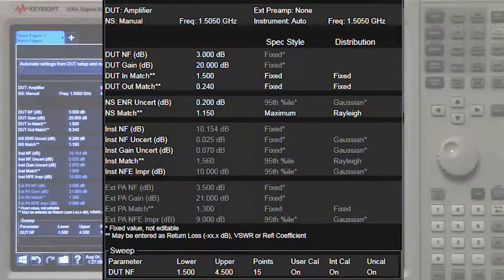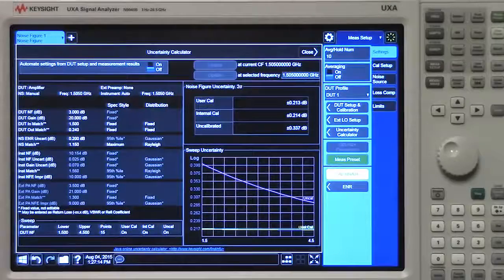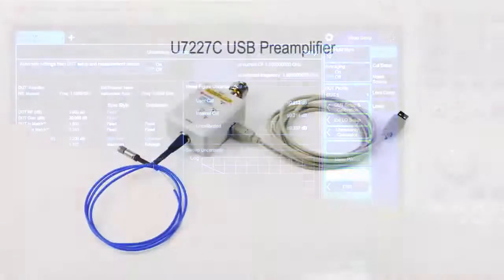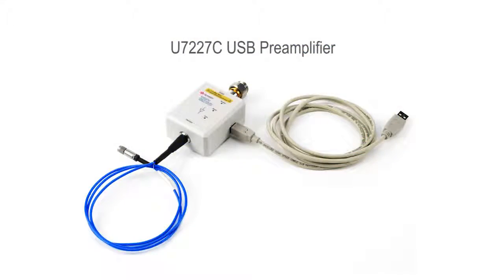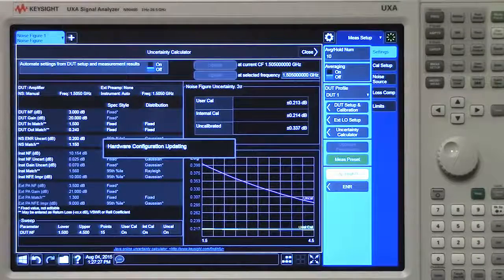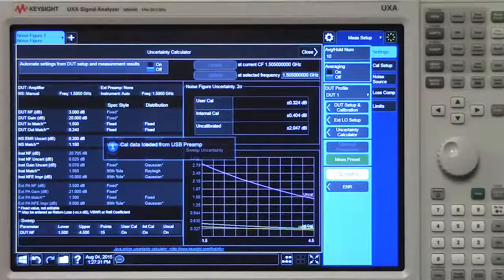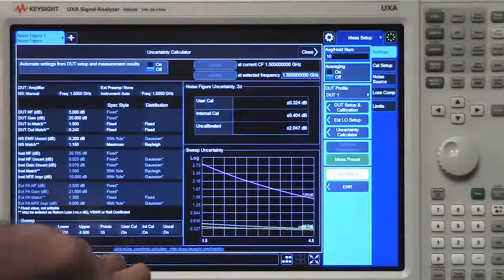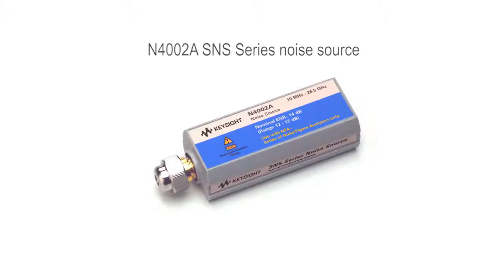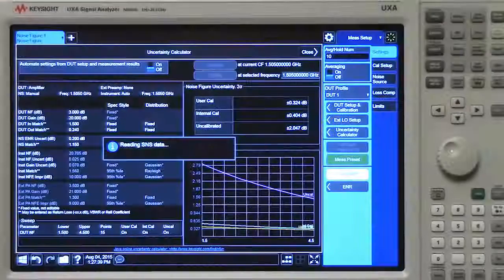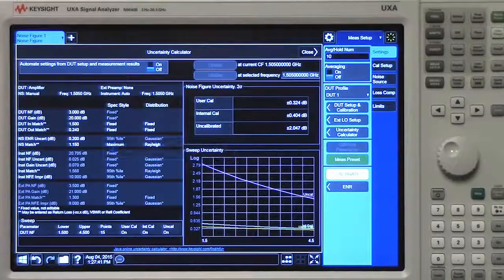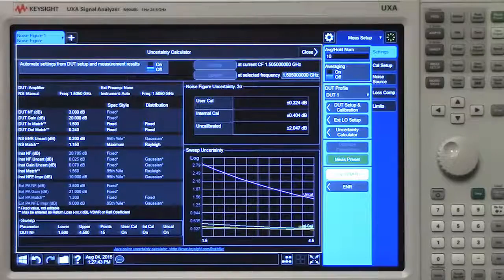Notice how the instrument populates its own noise figure, uncertainty, and other values. If I connect my external preamp right now, you will notice a splash screen pop up that says the hardware configuration is updating and cal data is loaded into the instrument. I'm also going to plug in the noise source right now, and another splash screen shows up saying that we are reading the SNS data to get the ENR values.